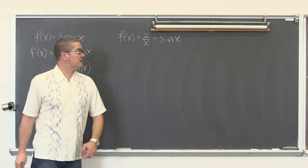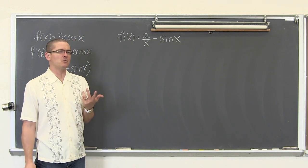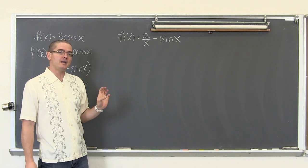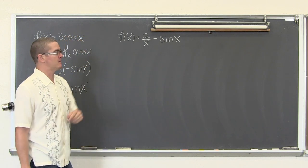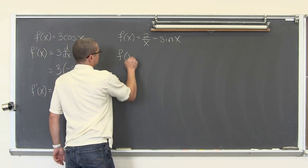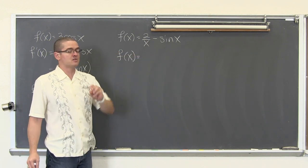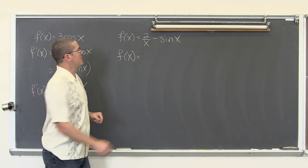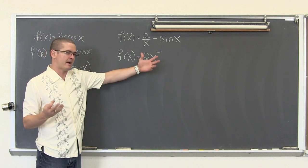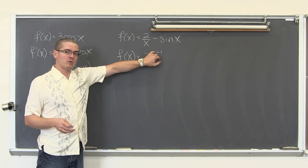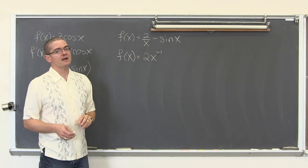Our second example: f(x) equals two over x minus sine of x. This is two divided by x, and we have not learned the quotient rule yet, nor would I want to use it here because it can be easily rewritten as two times x to some power using the constant rule. We have a subtraction so we use the difference rule. Before starting, we take x to the first power in the denominator and rewrite it — floating that x up — as two times x to the negative one power.